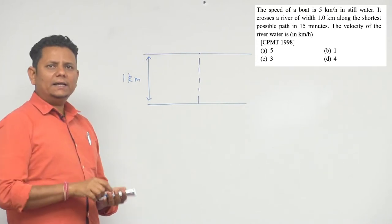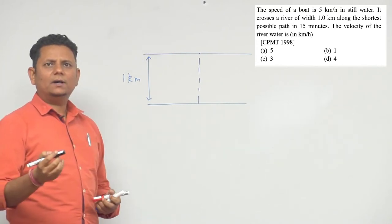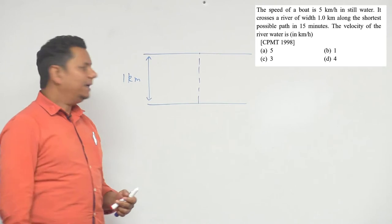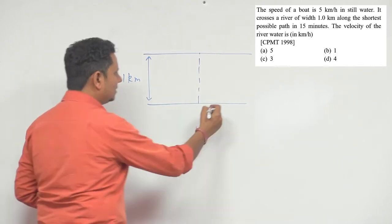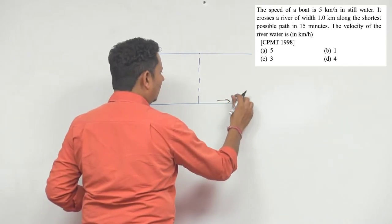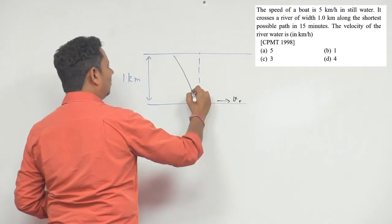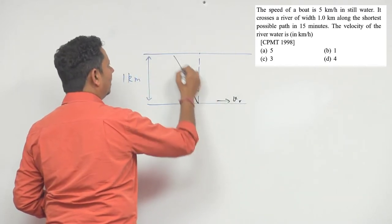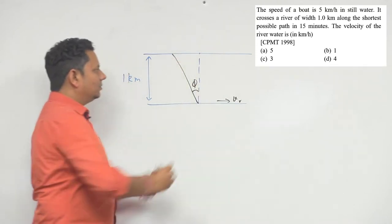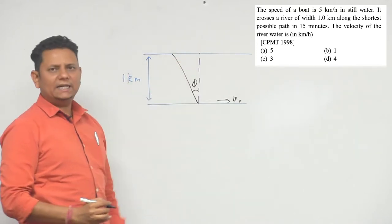Now we have to determine the angle. If the shortest path is at this angle, the boat travels here at this angle.